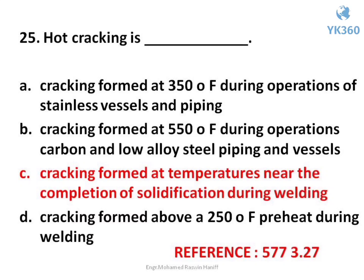Question number 25. Hot cracking is — options are: A. Cracking formed at 350°F during operations of stainless vessels and piping, B. Cracking formed at 550°F during operations of carbon and low alloy steel piping and vessels, C. Cracking formed at temperatures near the completion of solidification during welding, D. Cracking formed above a 250°F preheat during welding. Answer is option C. Cracking formed at temperatures near the completion of solidification during welding.